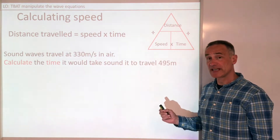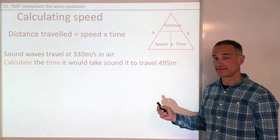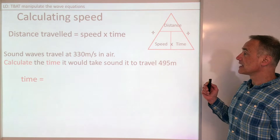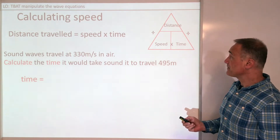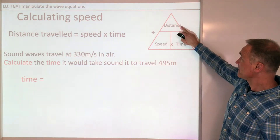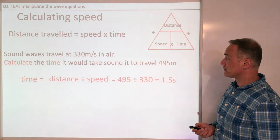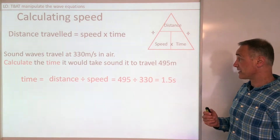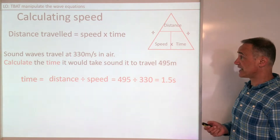Pause the video and have a go at this one yourself. So we want time this time. Covering up time in the triangle, it's distance divided by speed, which equals 495 divided by 330, which gives us 1.5 seconds.